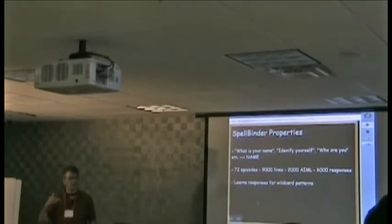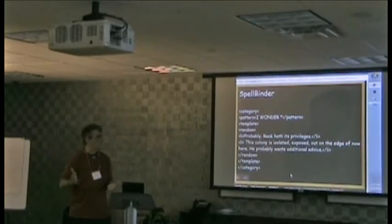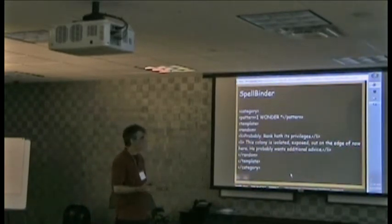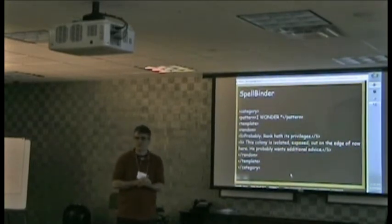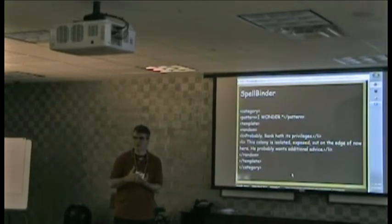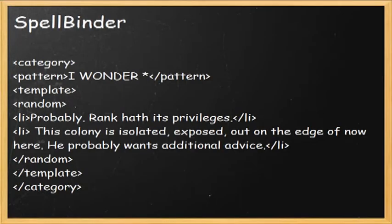So the advantage of Spellbinder now is that it would take those inputs and reduce them to a canonical form and then discover that the closest matching pattern in the pre-existing pattern set is just, I wonder by itself. So now, for every transcript instance where the input to Captain Kirk was, I wonder something, the spellbinder will add the response to this list of random responses.